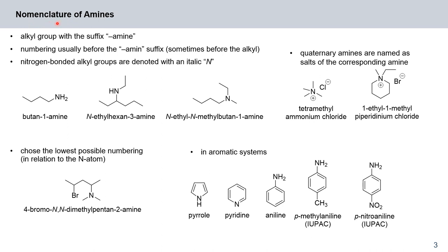Let's spend a brief moment on the nomenclature of amines. The way they are named is: take the name of the alkyl group and add the suffix 'amine'. To indicate the position of the amine group, the numbering is inserted before the suffix. You could name a compound either butane-1-amine or 1-butanamine. Nitrogen-bonded alkyl groups are denoted with an italic N — for example, N-ethylhexane-3-amine, or N-methyl-N-methylbutane-1-amine.